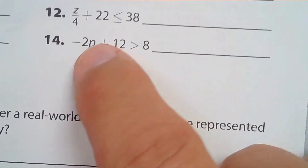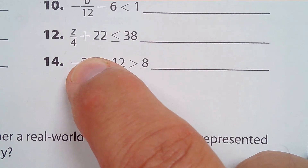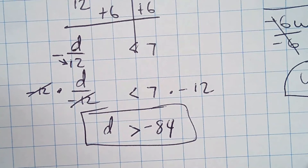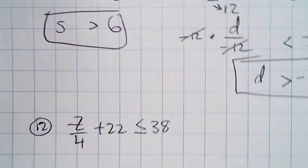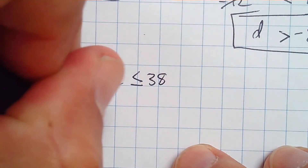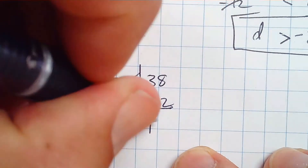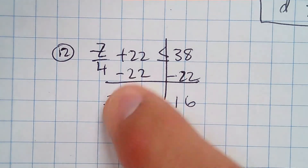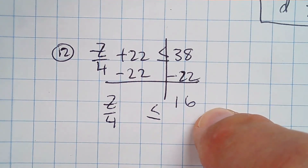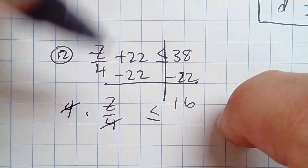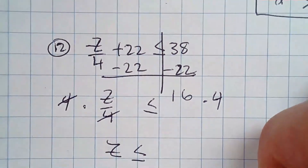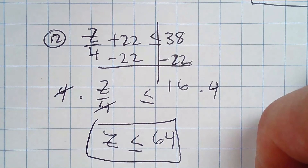Number 12: z divided by 4 plus 22 is less than or equal to 38. We subtract 22 from both sides, giving z divided by 4 is less than or equal to 16. Then we multiply both sides by 4, and z is less than or equal to 64.